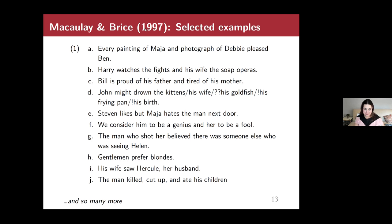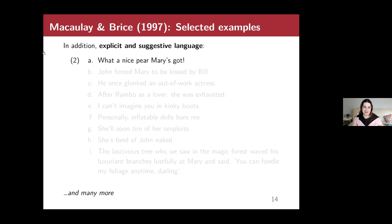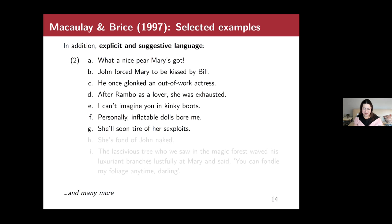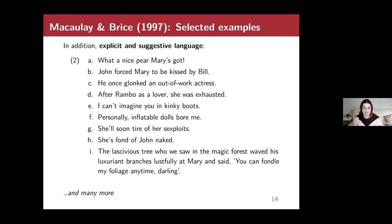In addition to stereotypical examples, Macaulay and Brice also find explicit and suggestive language. For example: 'What a nice pair Mary's got' — where 'pair' is a wordplay on P-A-I-R. 'John forced Mary to be kissed by Bill.' 'He once glonked an out-of-work actress.' Again, as an exercise — what syntactic phenomenon is each of these showing, and is the explicit language actually necessary to illustrate it? It's not completely obvious that it is.